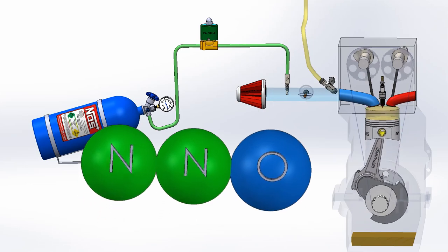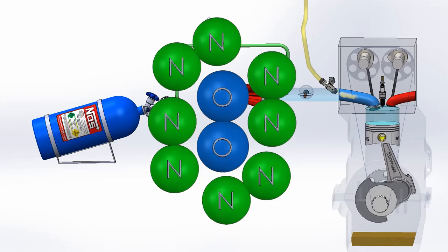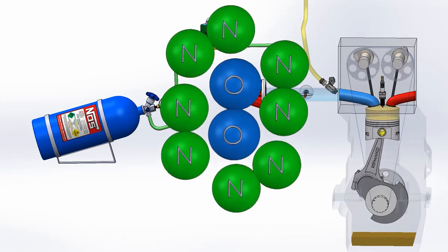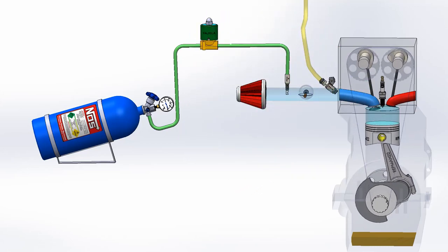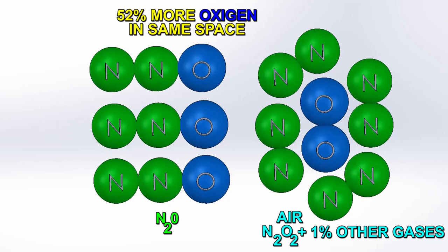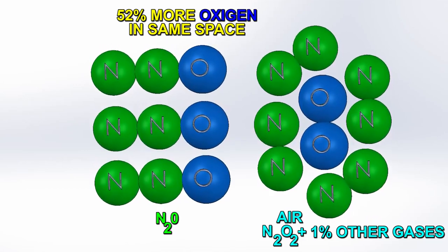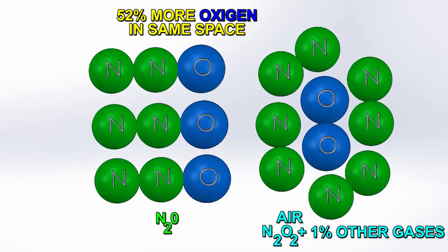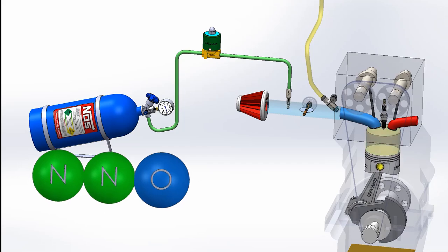Nitrous oxide is made up of 66% nitrogen atoms and 33% oxygen, while the air that we and the engine breathe is made up of 78% nitrogen, 21% oxygen, and 1% other gases. N2O is 52% denser. It means that in the same space, we have 52% more oxygen concentration than in the air, and as a result, more fuel can be injected, increasing power.